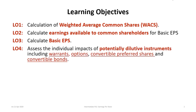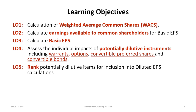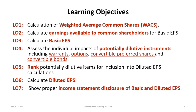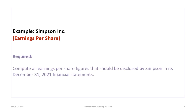Fourth, we will assess the individual impacts of potentially dilutive instruments including warrants, options, convertible preferred shares, and convertible bonds. Fifth, we'll rank potentially dilutive items for inclusion into diluted EPS calculations. Sixth, we'll calculate diluted EPS.